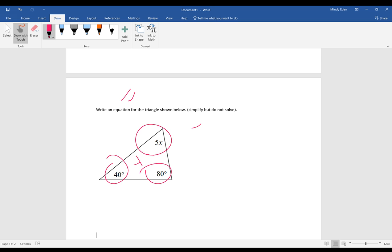So I'm going to take 5x plus 40 plus 80, and I know all together I have to set it equal to 180 degrees.